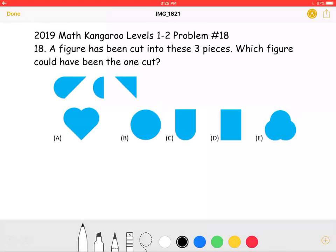This is the 2019 Math Kangaroo Levels 1-2, Problem Number 18. A figure has been cut into these three pieces. Which figure could have been the one cut?